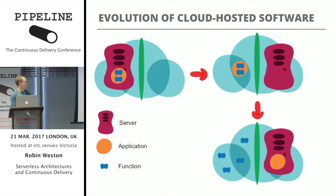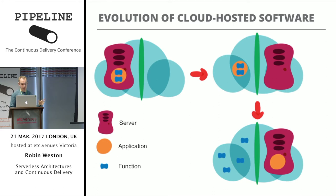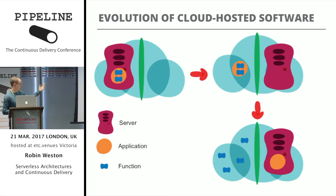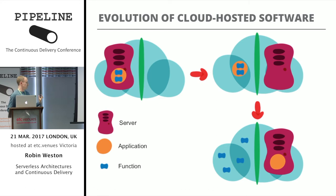I like to think of functions as a service as the next evolution of cloud-hosted software. In these diagrams, the green line divides what you're responsible for managing (left) from what you've delegated to your cloud provider (right). Top left is infrastructure as a service — like Amazon EC2 — where you spin up a server and are responsible for deploying and maintaining everything on it.